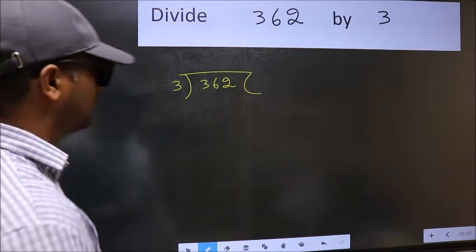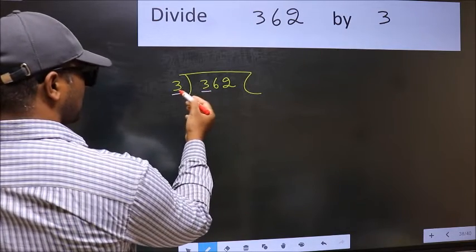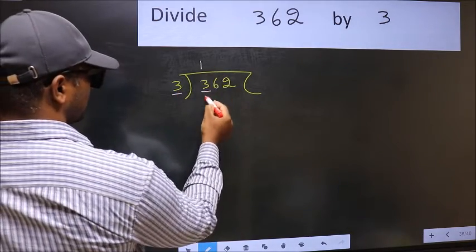This is your step 1. Next, here we have 3, and here also 3. When do we get 3 in the 3 table? 3 once is 3.